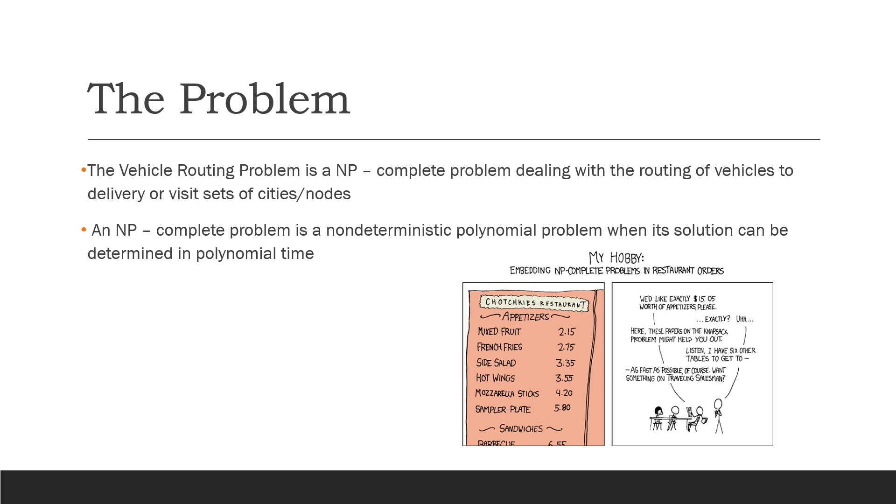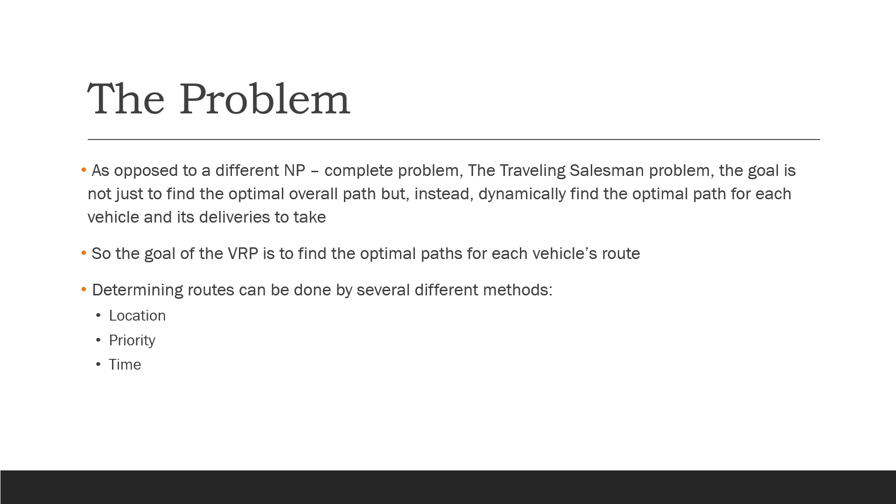This problem deals with the routing of vehicles to delivery or visit sets of cities or nodes. An NP-complete problem is a non-deterministic polynomial problem when its solution can be determined in polynomial time. As opposed to the traveling salesman problem, which we studied extensively in the first five projects, the goal here is not just to find the optimal overall path, but instead to dynamically find the optimal path for each vehicle and the deliveries we give it.